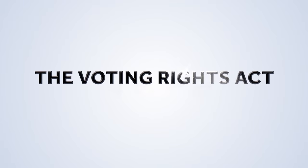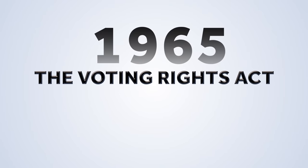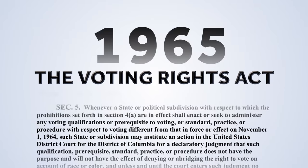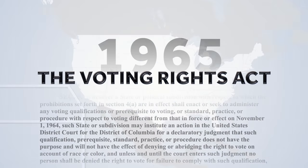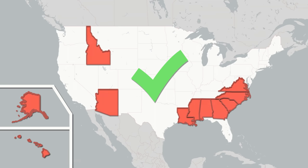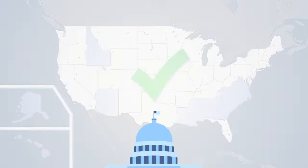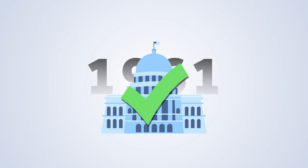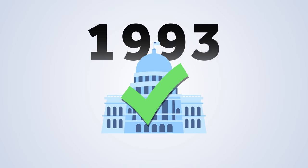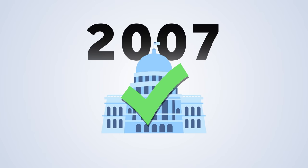The Voting Rights Act of 1965 banned these practices outright and, anticipating how states could create new discriminatory laws, it also mandated that jurisdictions with a history of discrimination must get federal approval for any changes to their election laws. Congress voted to keep these provisions in place in 1970, 1972, 1982, and as recently as 2007.